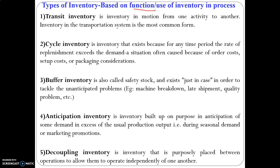The third classification is based on functions — what is the purpose of the inventory in the production system. Based on that, we classify it into five different types. The first one is transit inventory. If you are going to move inventory from, say, plant A to plant B, the movement can be in a lorry or in a forklift container. If a particular product — raw material, finished goods, or a tooling accessory — is in motion, it is known as transit inventory.